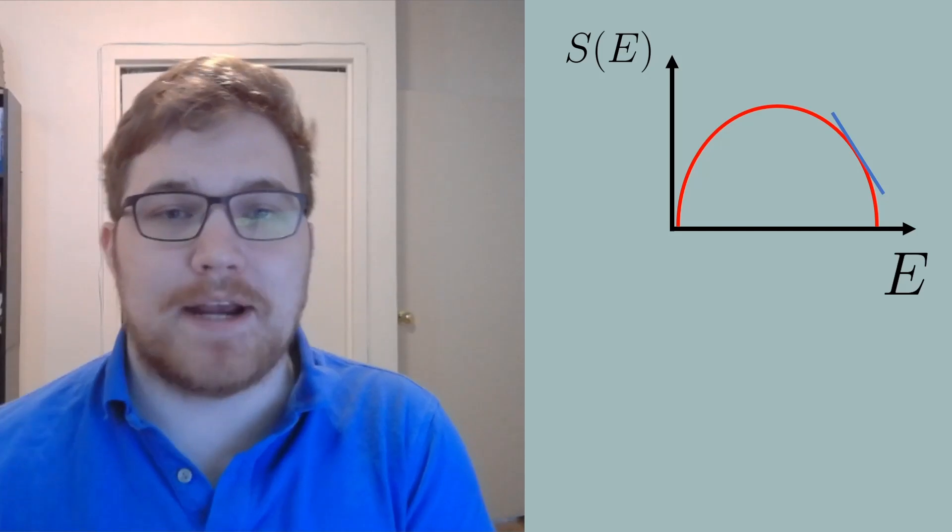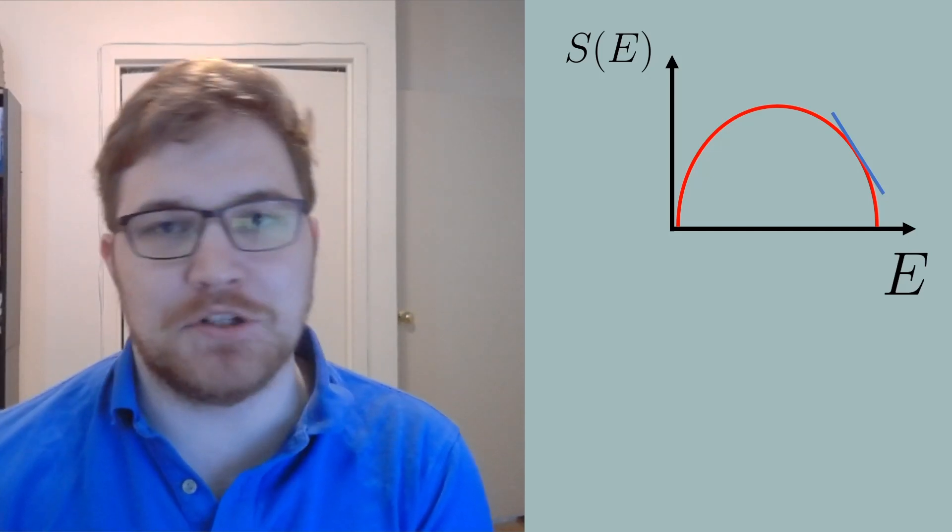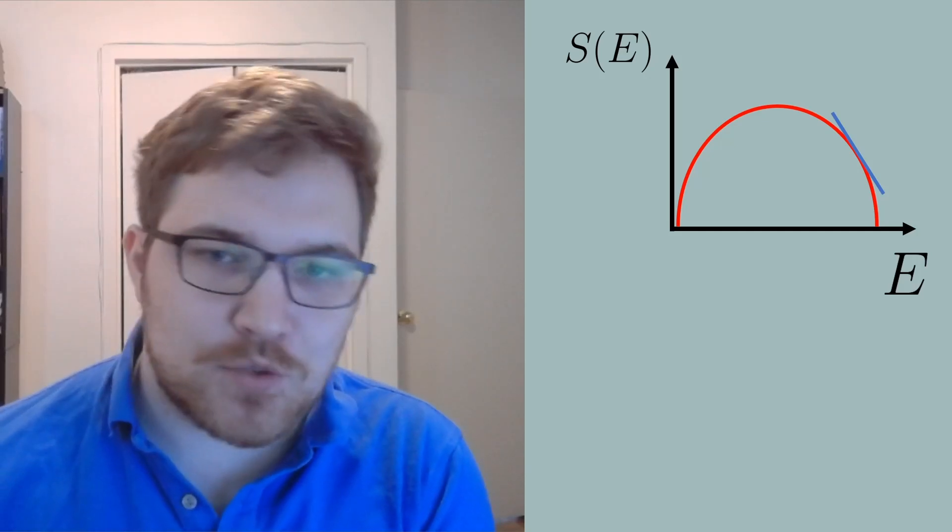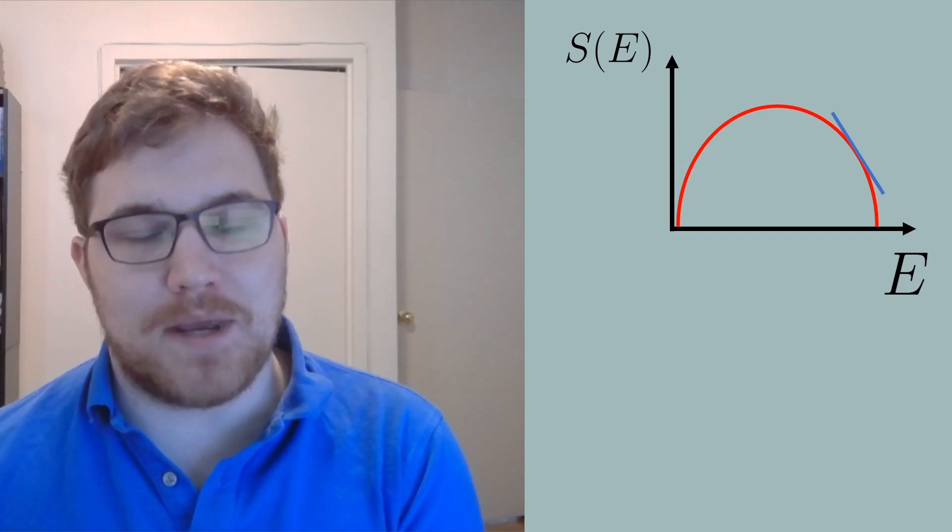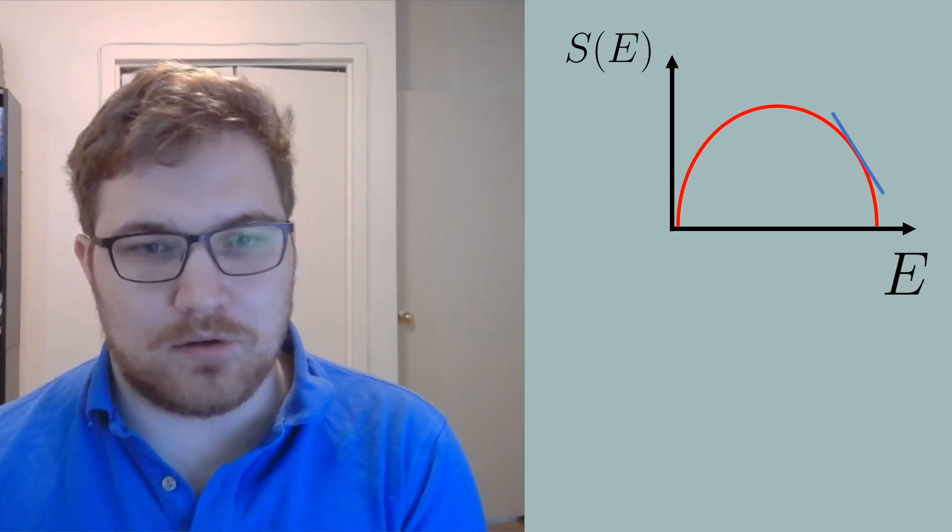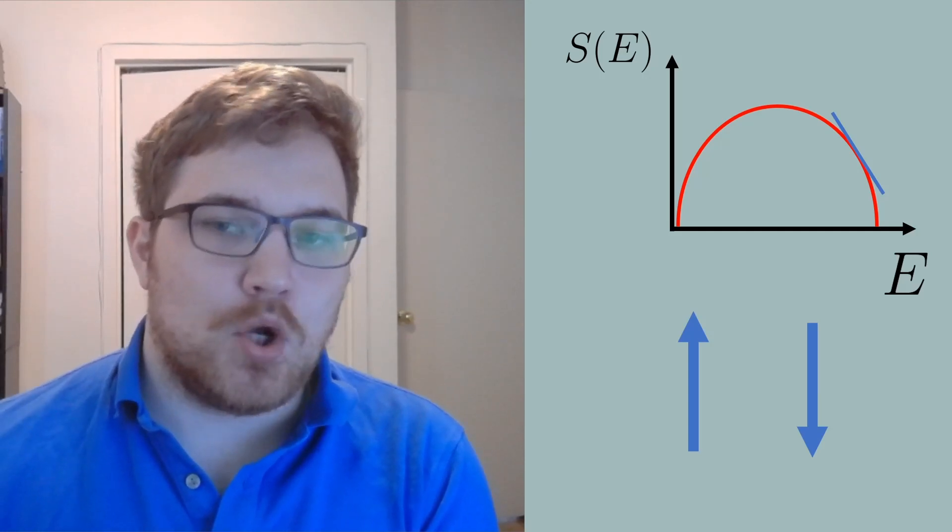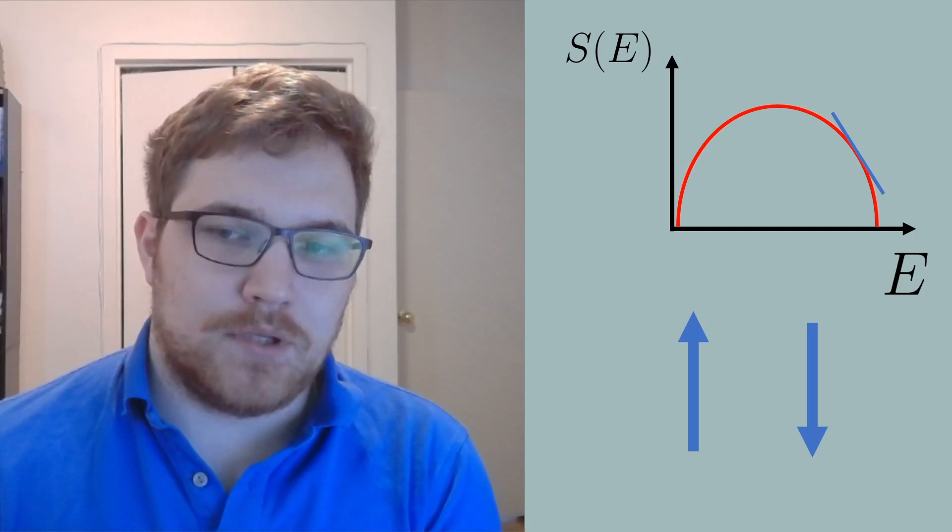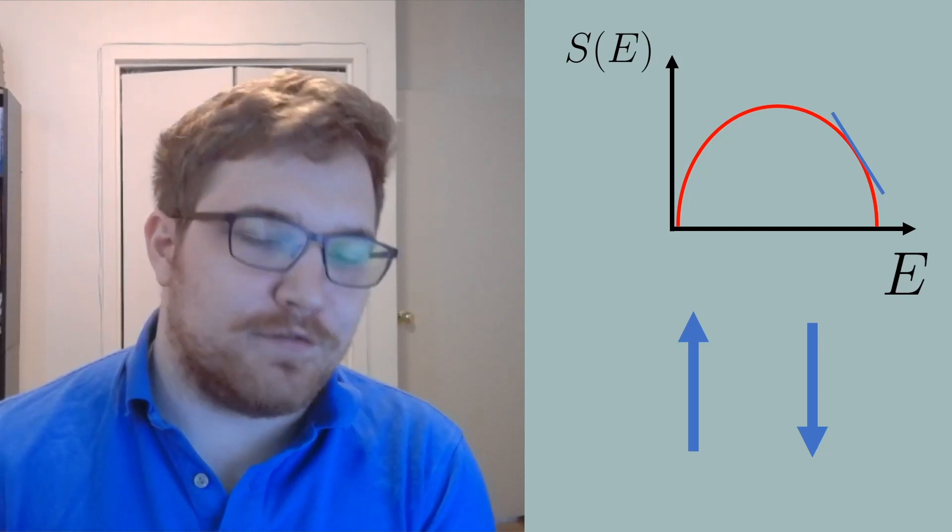This is contrasted with the case that entropy eventually decreases when we increase energy. This happens when we have a situation where the degrees of freedom in our system have a finite space to explore themselves. The example we gave was the quantum spin, which is a two-level system, meaning each individual spin can only have one of two configurations.